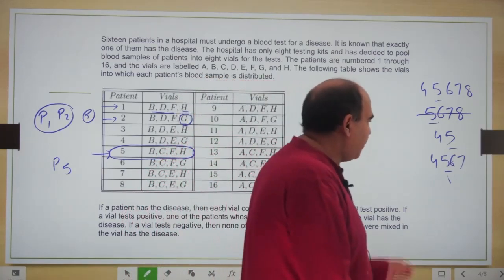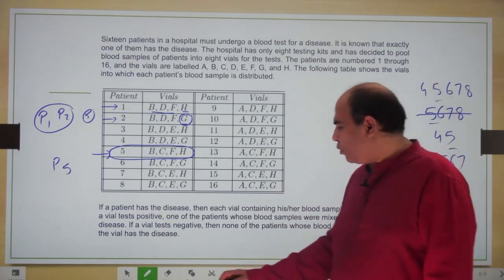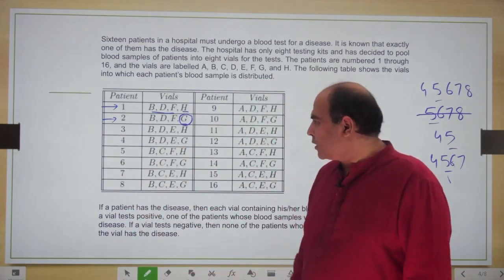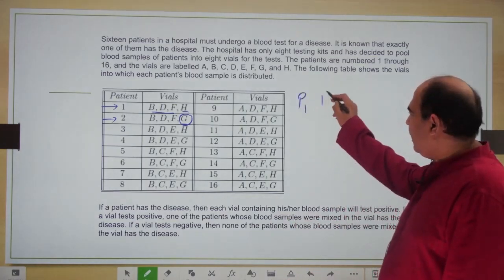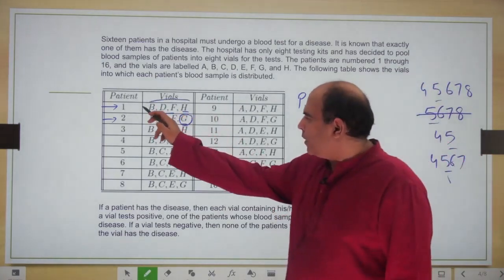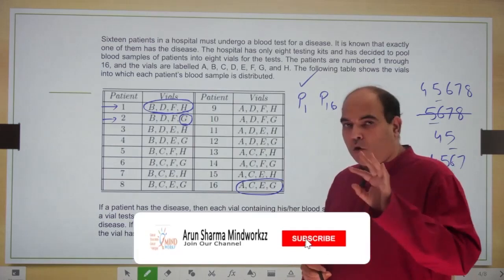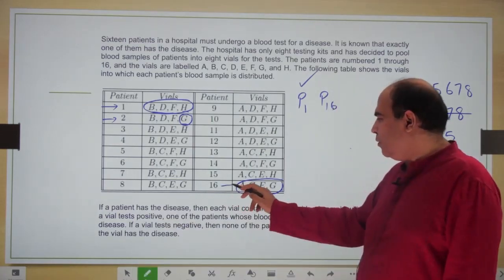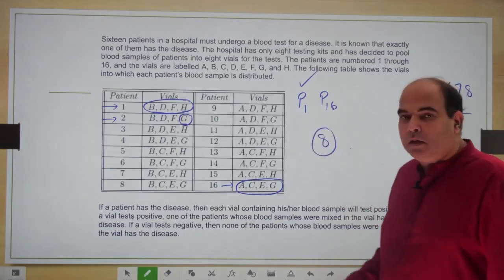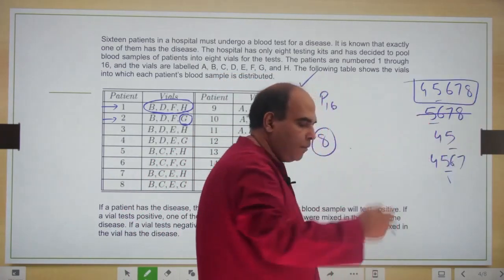Now imagine mixing patient 1 and patient 16, whose vials are completely different from each other. If patient 1 has the disease, their blood goes into B, D, F, H — all turn positive — and because patient 1's blood was mixed into patient 16's allocation A, C, E, G, those also turn positive, giving a total of eight positives. So both four and eight are possible. There is only one option that includes both four and eight in the range, and that is the correct answer: four through eight.